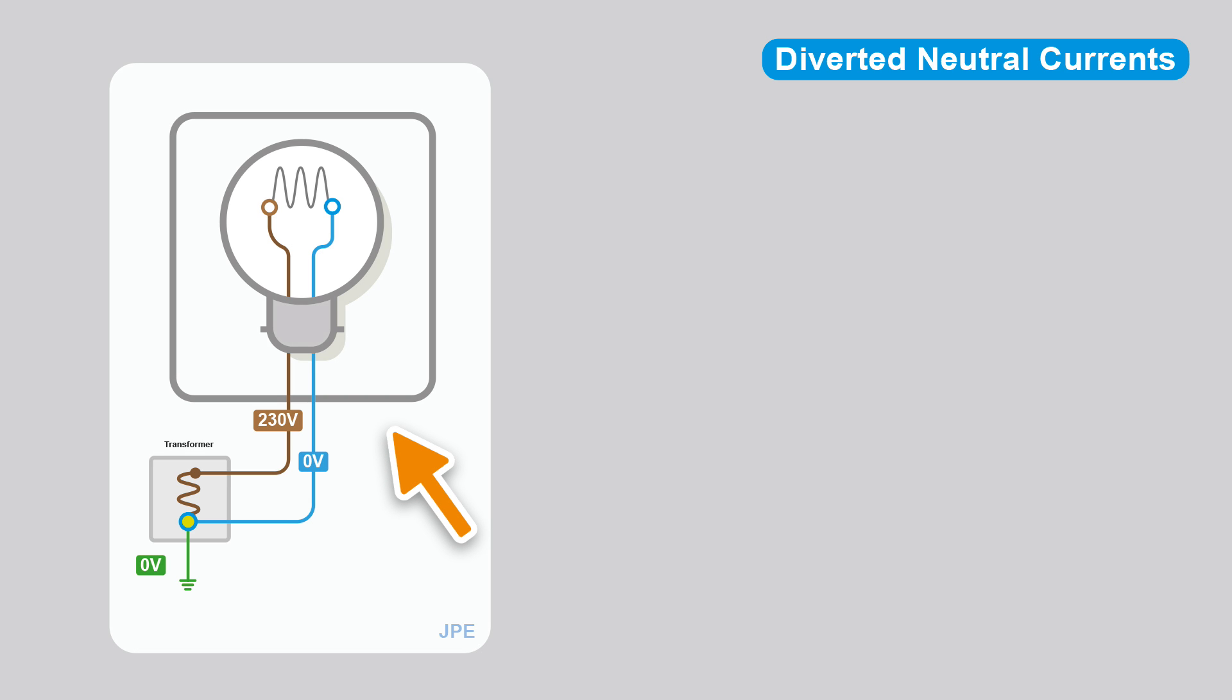Here we have a very simple circuit. We have a light bulb in its enclosure and it's fed from a transformer in the street. We have the line coming in, 230 volts, goes through the element, returns on the neutral, back to the transformer.